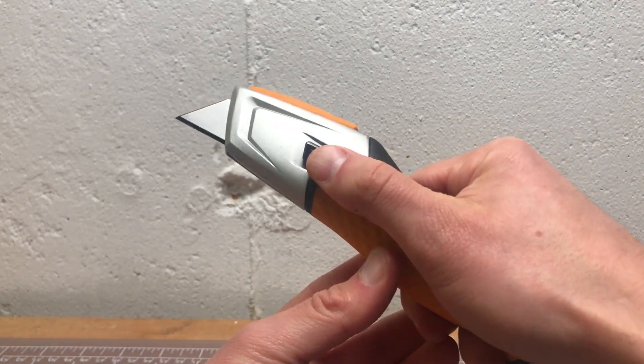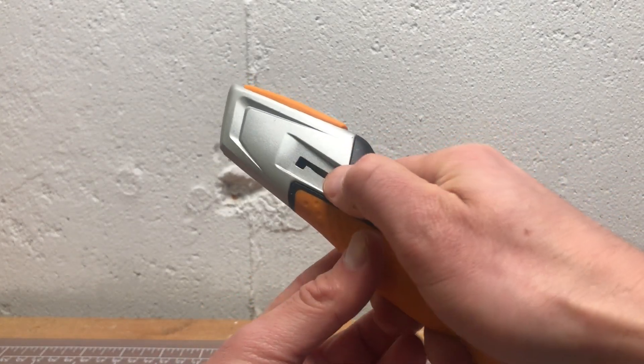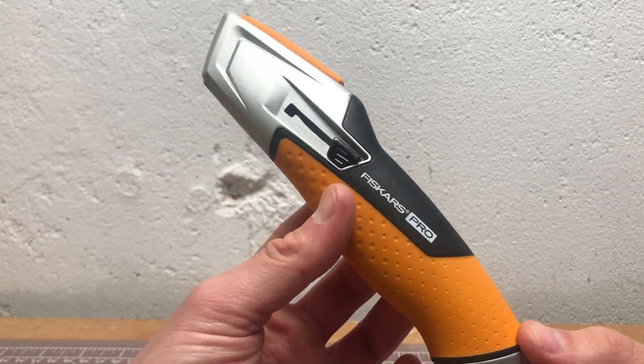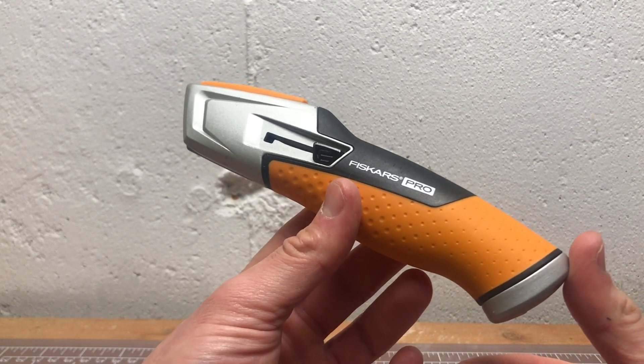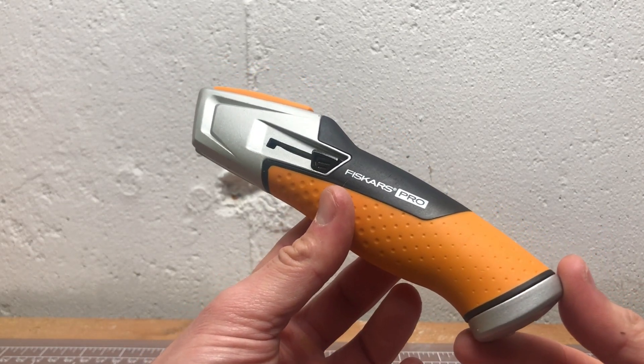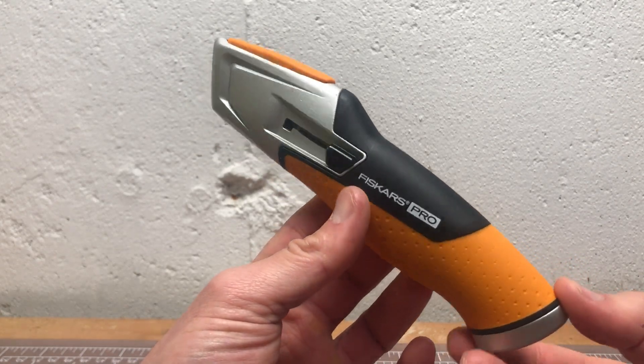This is the extendable, the thumb extendable one. I would consider this to be the most standard type of box cutter, a thumb extendable one. But Fiskars has a bunch of them, like an extendable one, a fixed blade one, one specifically for cutting drywall, another one for other purposes.